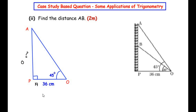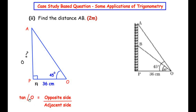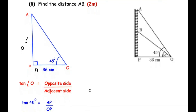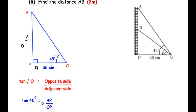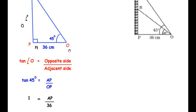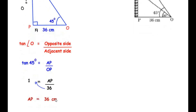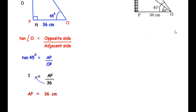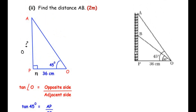The trigonometric ratio using opposite and adjacent sides is tan. So tan(angle O) = opposite/adjacent. Angle O is 45°, so tan(45°) = AP/OP. Since tan 45° = 1, we get 1 = AP/36. Therefore AP = 36 cm.